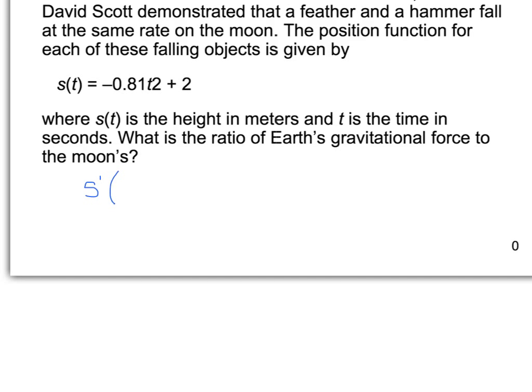So the derivative of s(t) is going to give me velocity, which is really equal to, and I apologize, that should be t squared. I have negative 0.81 times 2, which is going to give me negative 1.62t.